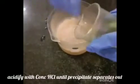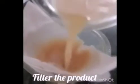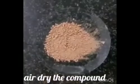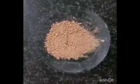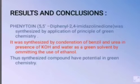Acidify with concentrated HCl until precipitate separates out. Filter the precipitate and air dry the product. Crystalline phenytoin is obtained.